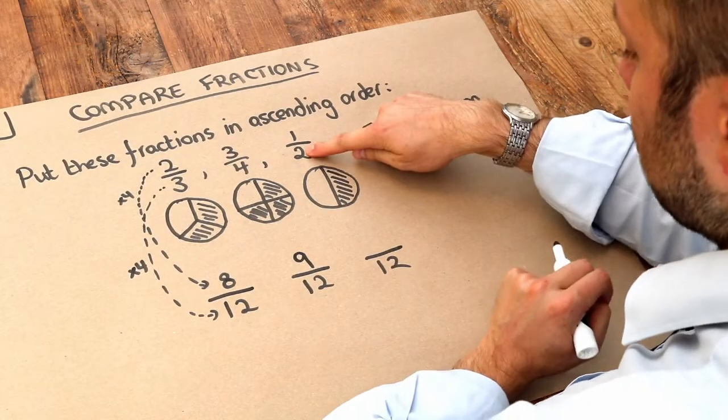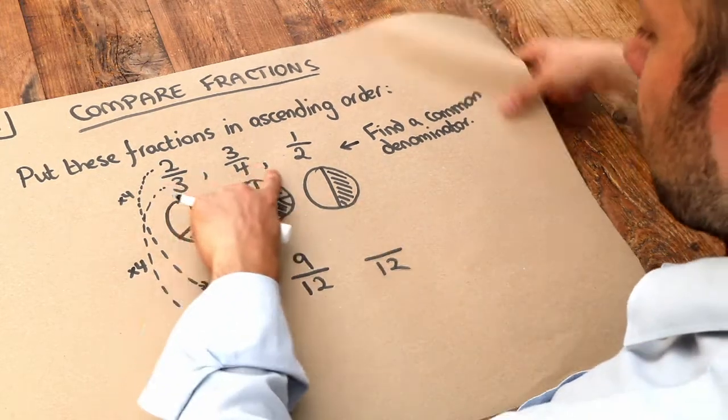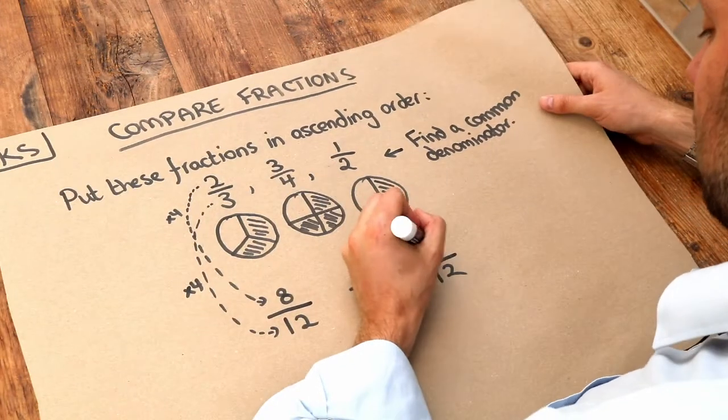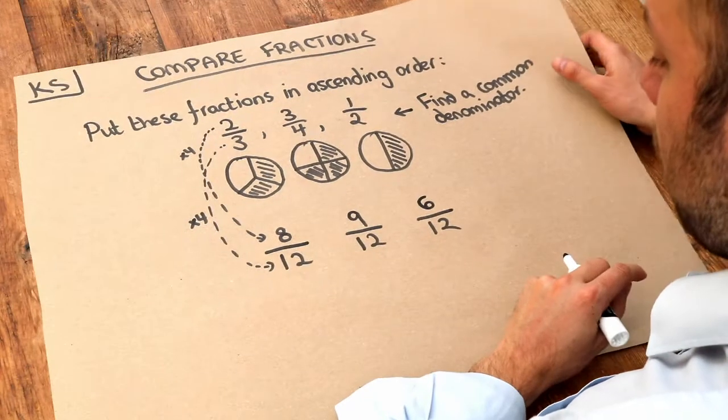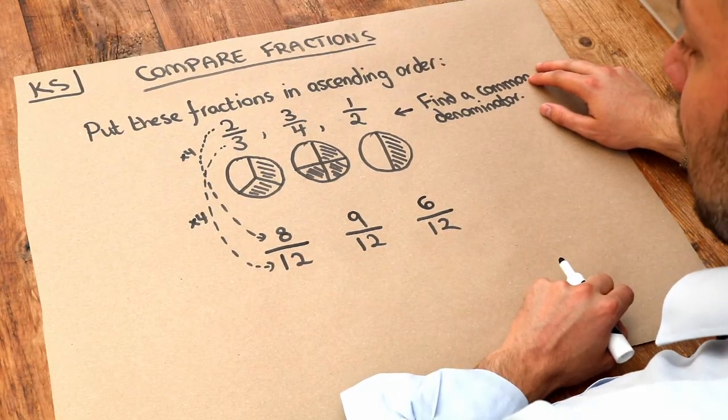And here, what do we have to times the two by to get to twelve? We have to times it by six, and therefore that one we also have to times by six. And now because they're all over twelve, it's much easier to compare these fractions.